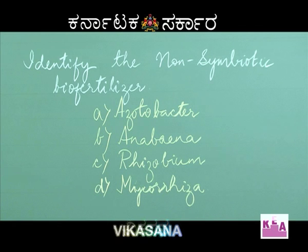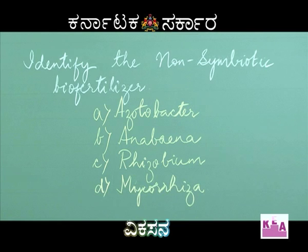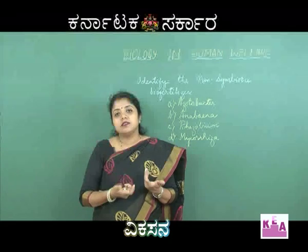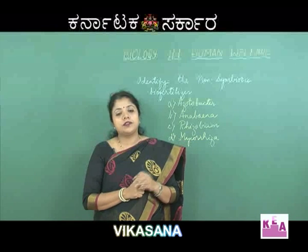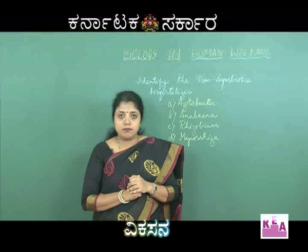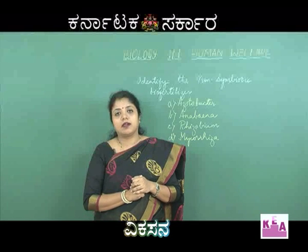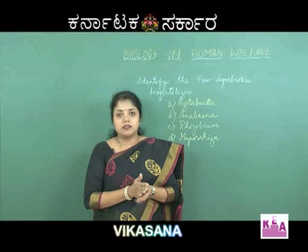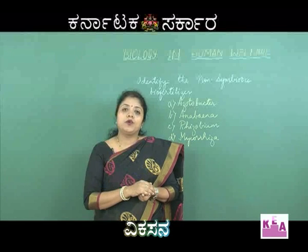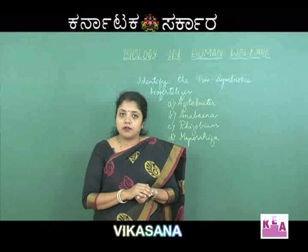The next question: Identify the non-symbiotic biofertilizer. Options are Azotobacter, option B Anabaena, option C Rhizobium, and option D Mycorrhiza. A biofertilizer is an organism which can increase the nutritive value of the soil. Some of them are non-symbiotic and many are symbiotic organisms that help in improving soil fertility or increasing the nitrogen content of the soil.